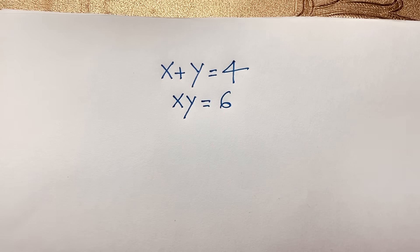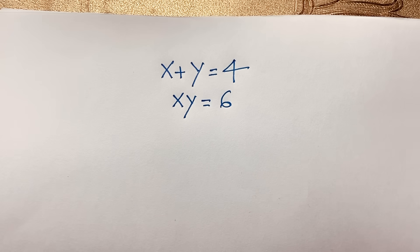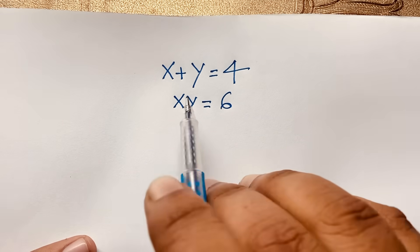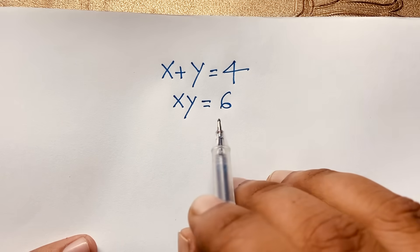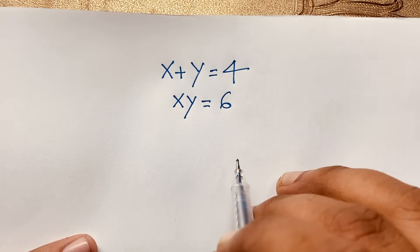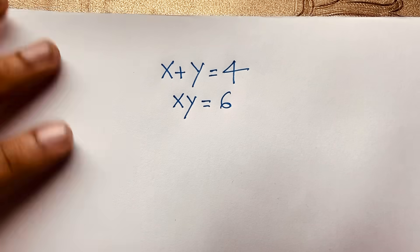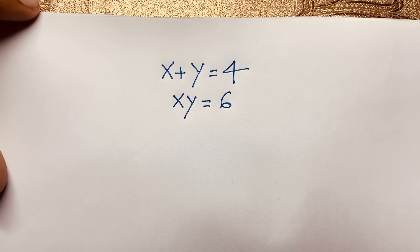Hello everyone. In this video we have solved a nice Maths Olympiad question. Here x plus y is equal to 4 and xy is equal to 6. We will find out the value of x and y in this German Maths Olympiad question.